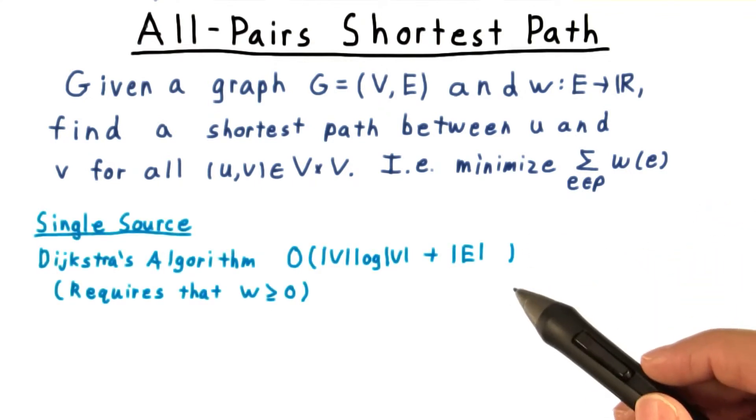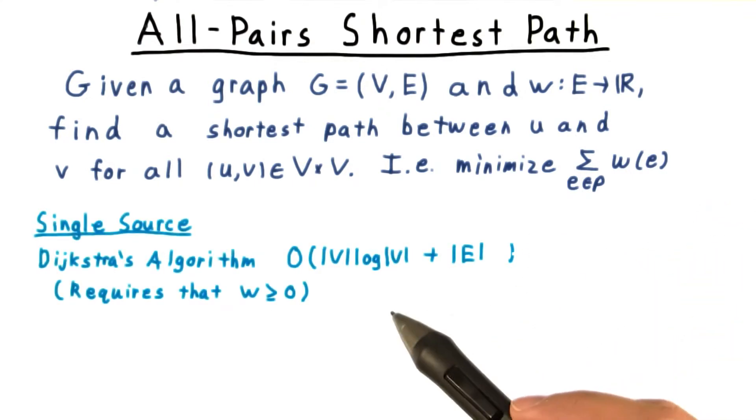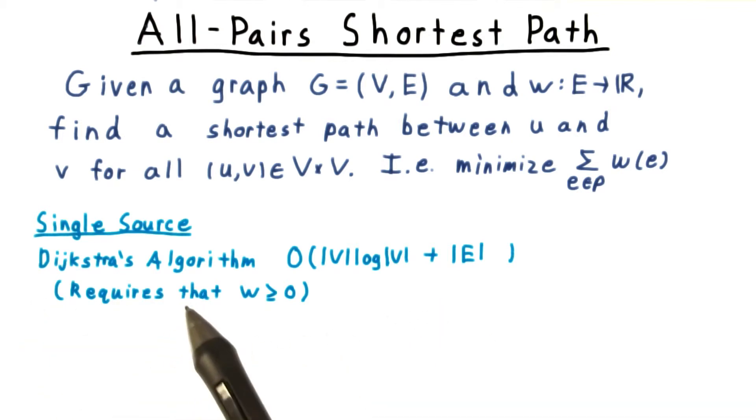Recall that for the single source problem, where we want to figure out the shortest path from one vertex to all others, we can use Dijkstra's algorithm, which takes V times log V plus E time when used with a Fibonacci heap. But this algorithm requires that the weights all be non-negative, an assumption that we don't want to make. For graphs with negative weights, the standard single source solution is the Bellman-Ford algorithm, which takes order of V times E time.